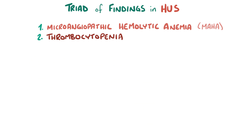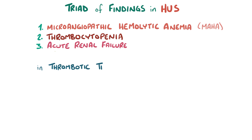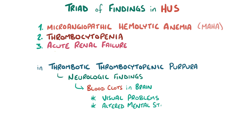Finally, severe ongoing damage to the capillary endothelium of the glomeruli in the kidney can result in renal failure, and that can lead to uremia or excess urea in the blood. In addition to the classic symptoms of hemolytic uremic syndrome, individuals with thrombotic thrombocytopenic purpura typically have neurologic findings because blood clots can affect the blood supply to the brain. This might result in visual disturbances, altered mental status, and even seizures and stroke, which can lead to death. People suffering from TTP usually also have a fever.